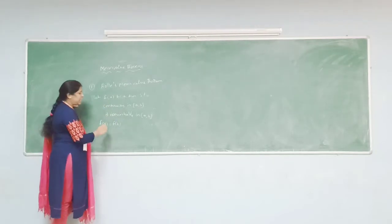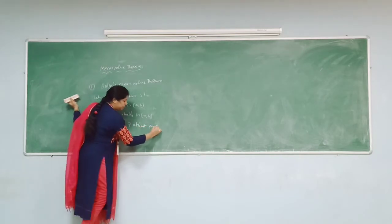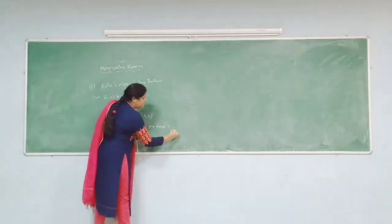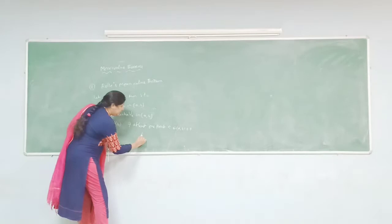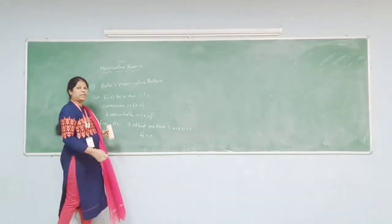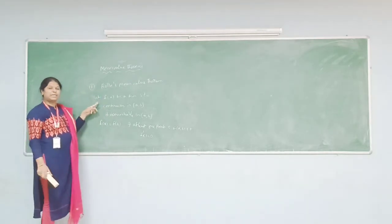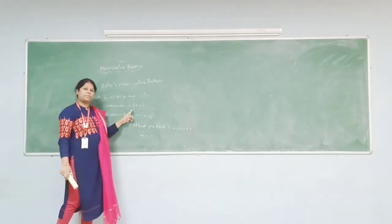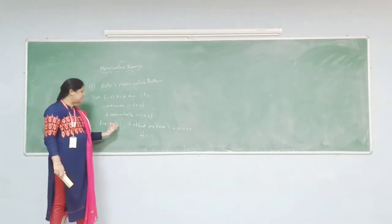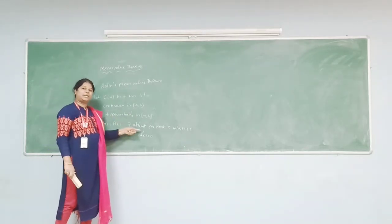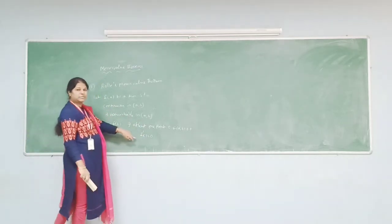If these three conditions are satisfied, then there exists at least one point c that belongs to the open interval (a, b) such that f'(c) is equal to 0. So the statement for Rolle's mean value theorem: f(x) is continuous in [a, b], differentiable in (a, b), and f(a) = f(b); then there exists at least one point c in (a, b) such that f'(c) = 0.